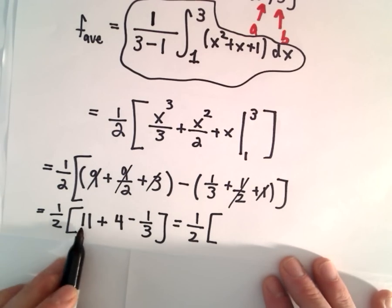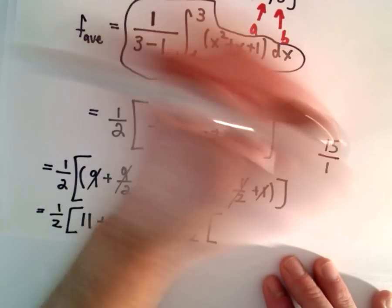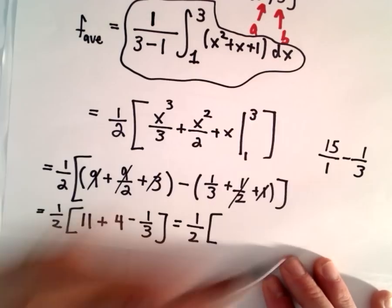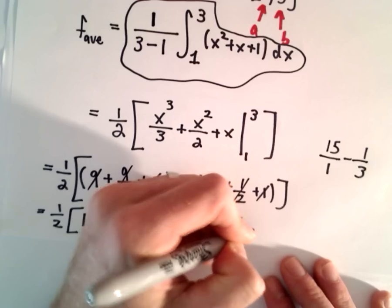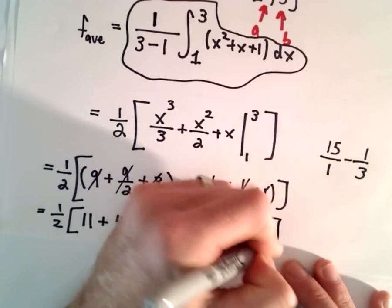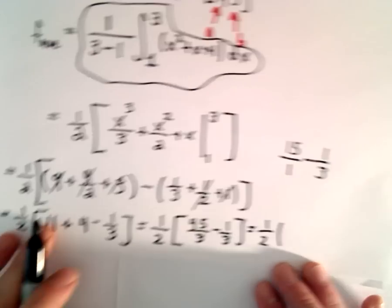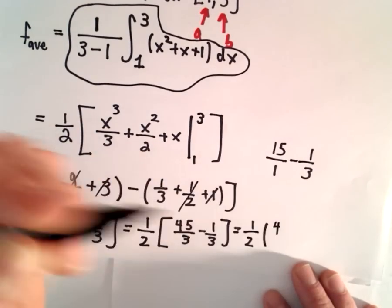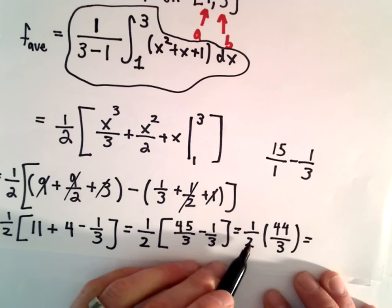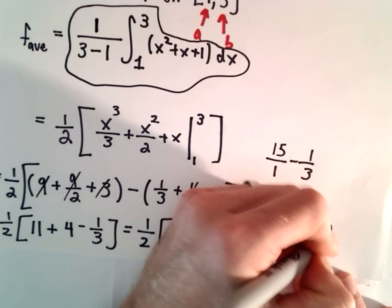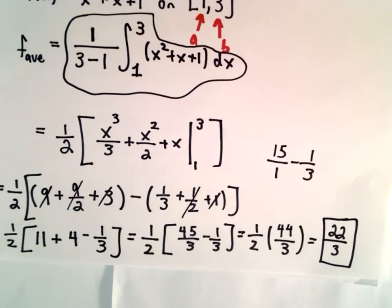Okay, so let's see. 11 plus 4 is 15. So we would have 15 over 1 minus 1 third. So if we get common denominators, that's going to be 45 over 3 minus 1 third. So that's going to be 1 half times 45 thirds minus 1 third. That's just 44 over 3. And 44 divided by 2 is going to leave us with 22 over 3. And that's our average value.